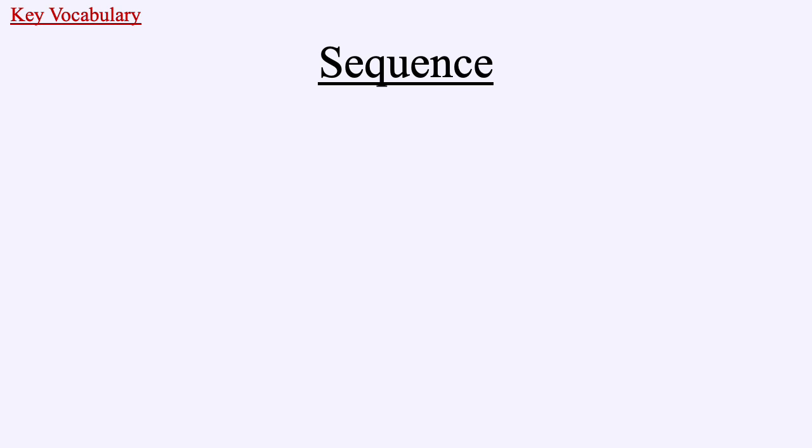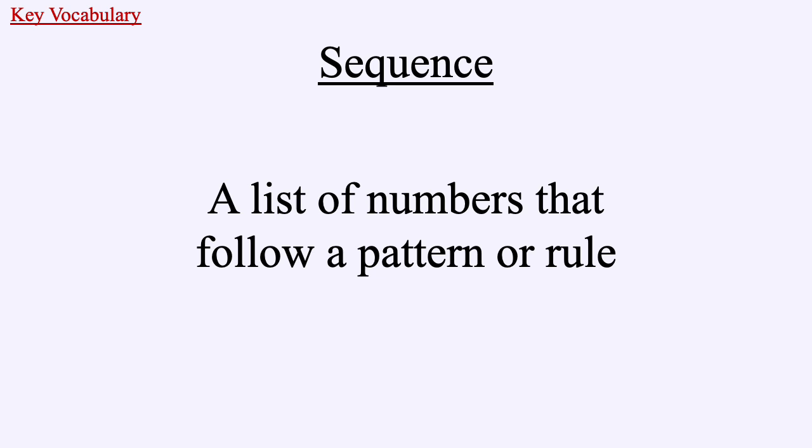Some key terms — today's all about sequences. How would you define what a sequence is? A sequence is a list of numbers that follow a pattern or rule. We saw how 3, 5, 7, 9, 11 all follow a pattern of adding 2 each time. It's a list of numbers that can go as long as it wants to or as short as it wants to. That key term you'll hear a lot today is 'sequence'.